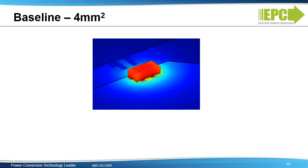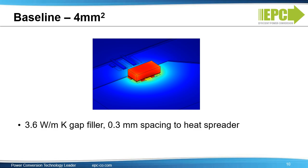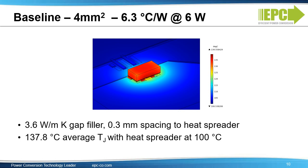Here's our baseline case. We're taking a 4-square-millimeter die, adding the gap filler, and taking the worst case of 0.3-millimeter spacing to the heat spreader. We get a result of 6.3 degrees C per watt at 6 watts of dissipation. From this thermal diagram, you can see that the highest temperature is 137.8 degrees C, with a heat spreader set at 100 degrees C — a total rise of 37.8 degrees C with 6 watts.